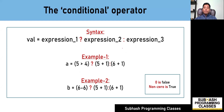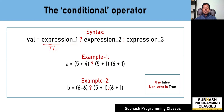Let me explain how this works. When your program encounters this conditional expression, it will first evaluate expression one. This expression one must either result in a true condition or a false condition. In C language, a value of zero is considered as false, and any non-zero value is considered as true.